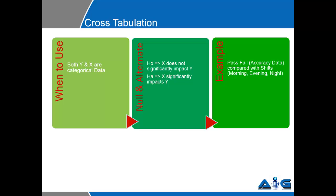Cross tabulation is to be used when both y and x are categorical data. Null hypothesis in this case will say that x does not significantly impact y, whereas alternate hypothesis will say that x significantly impacts y.